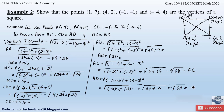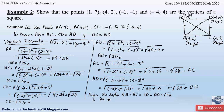Since all four sides AB = BC = CD = AD = √34, and the diagonals AC = BD = √68, therefore we can conclude that the given points form the vertices of a square.